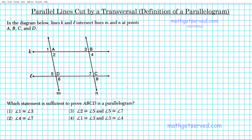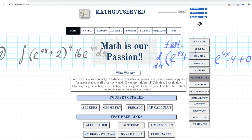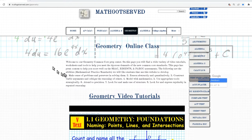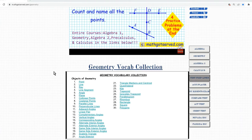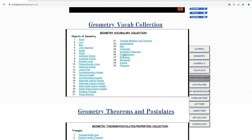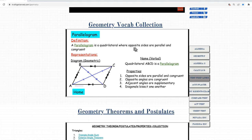First things first, what is a parallelogram? Let's take a look at the definition and then formulate a plan of action to determine the correct answer. Going to mathgotserved.com under the geometry link, scrolling down to the vocab section — parallelogram number 26 — a parallelogram is a quadrilateral where opposite sides are parallel and congruent.